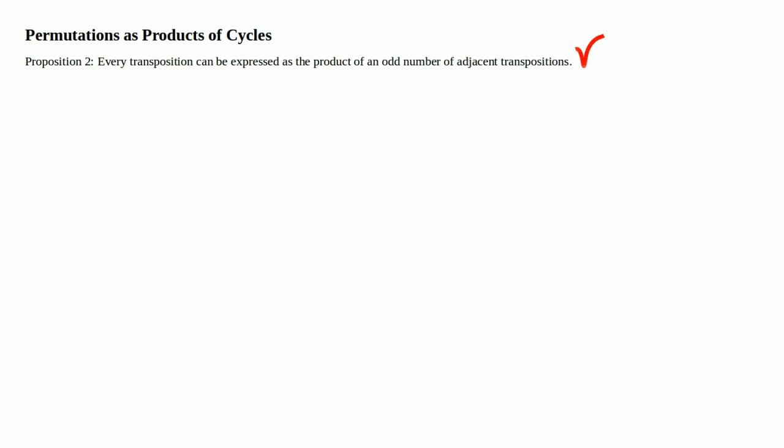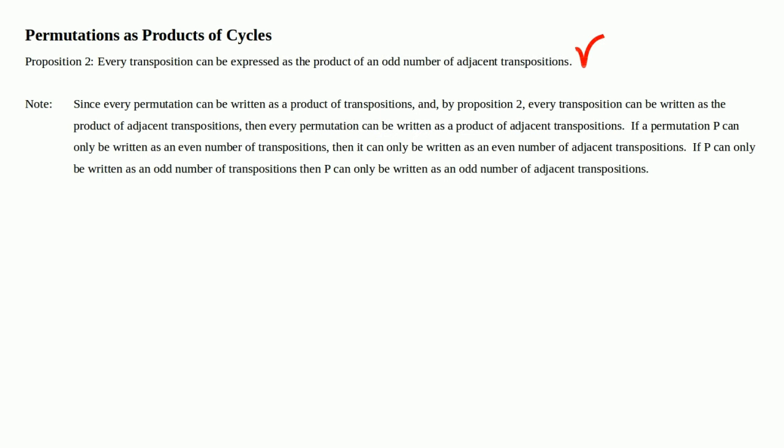Now that that's proved — every transposition can be expressed as the product of an odd number of adjacent transpositions — we can move on. Since every permutation can be written as the product of transpositions, and by Proposition 2, every transposition can be written as the product of adjacent transpositions, then every permutation can be written as the product of adjacent transpositions. If a permutation P can only be written as an even number of transpositions, then it can only be written as an even number of adjacent transpositions. If P can only be written as an odd number of transpositions, then P can only be written as an odd number of adjacent transpositions.